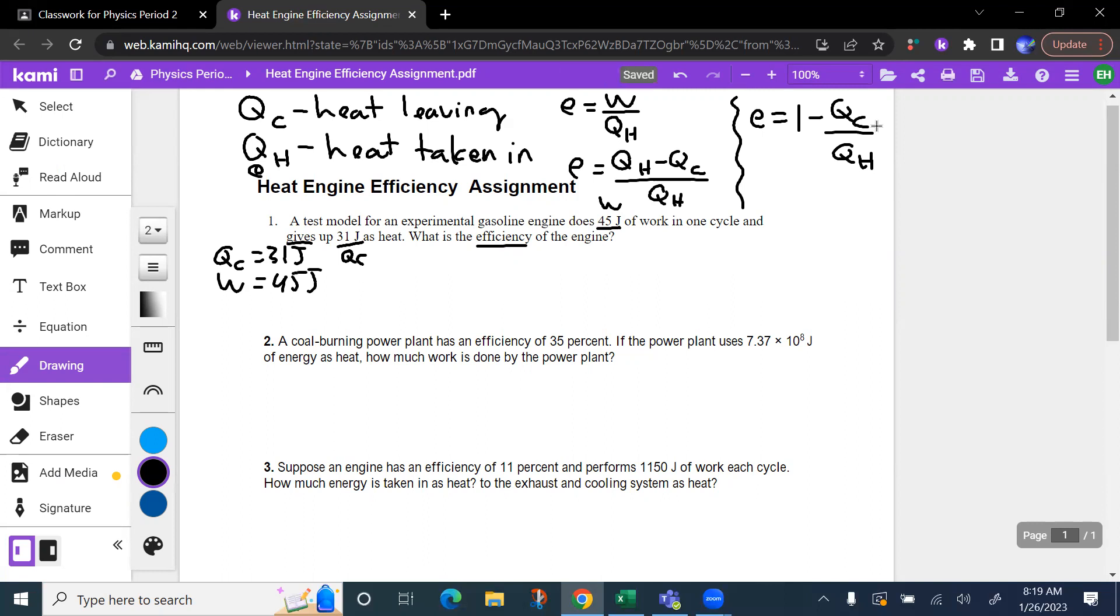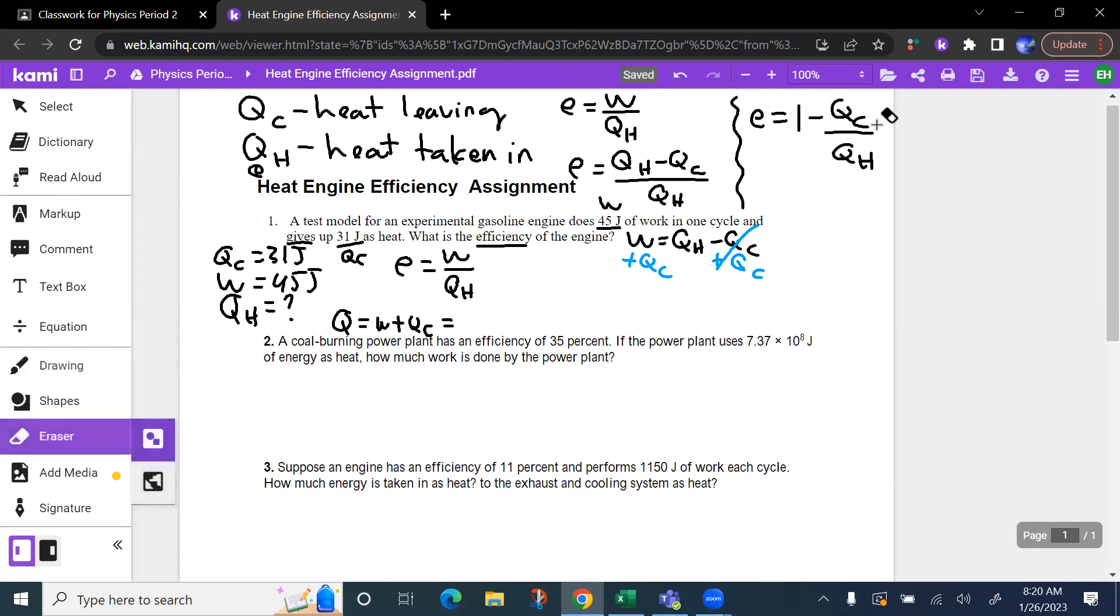And we are trying to find the efficiency. Now the efficiency is the work divided by the heat coming in, Qh. We don't have that. So this is going to be a two-part problem. We have to find Qh first. So work is equal to Qh minus Qc. Take your Qc and add it to both sides. And Qh is the work plus Qc, which is going to be 45 plus 31, which is 76 joules.